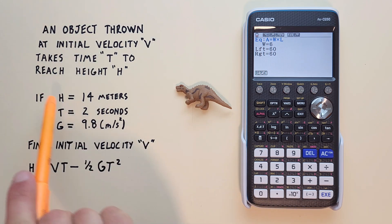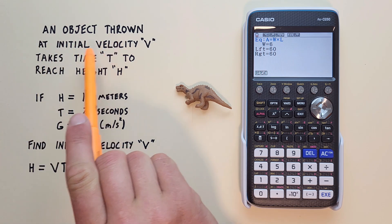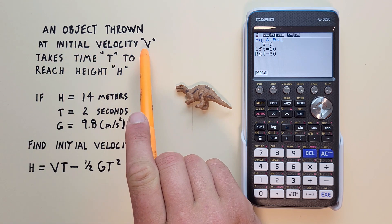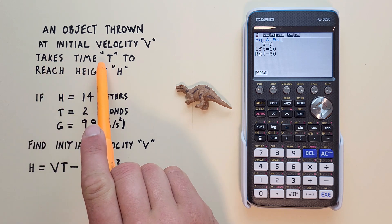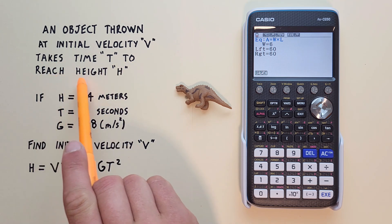All right, let's say we're given this problem. An object is thrown at an initial velocity V, and takes time T to reach height H.